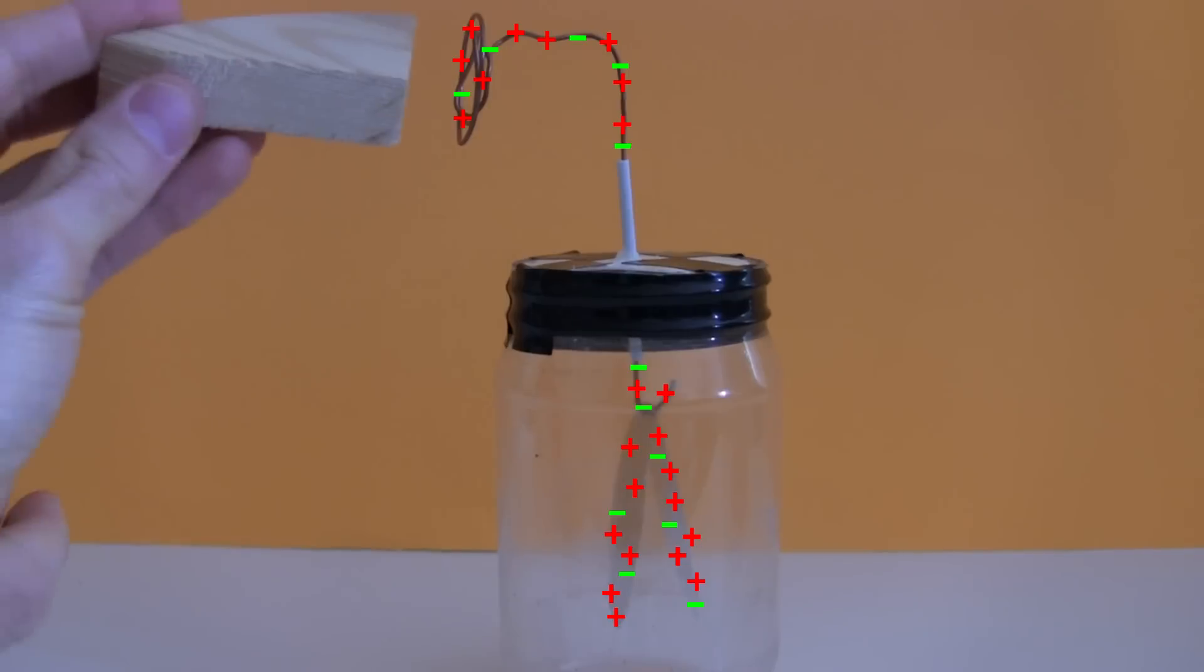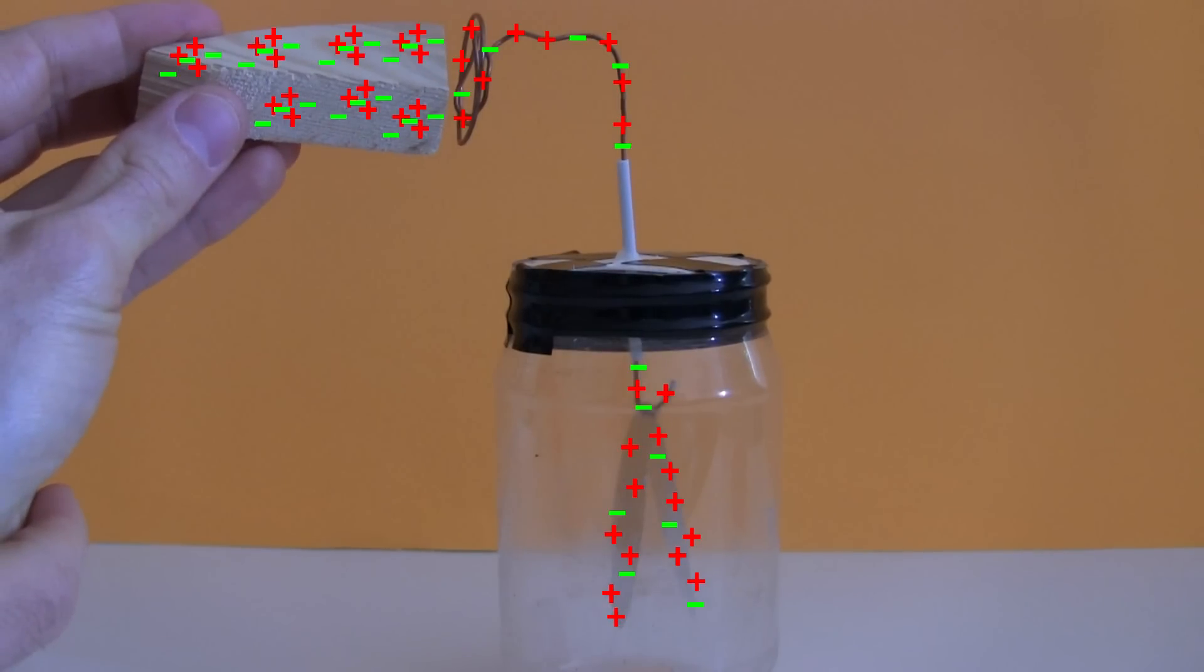And by now you can guess what happened with the wood. The electrons in the atoms were attracted to the terminal, causing one end of the wood to have a negative charge. And just like with the magnet, that negative charge repelled negative electrons down to the leafs, causing the leafs to become less positively charged and not repel each other as much.